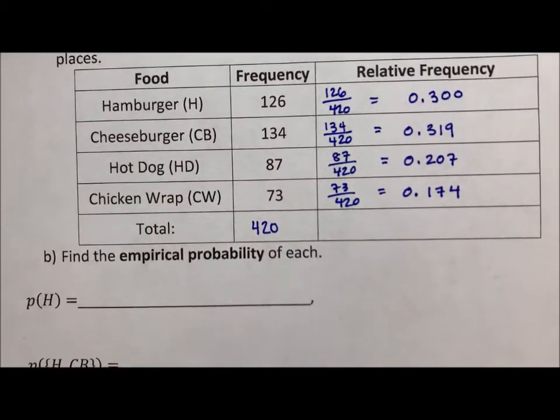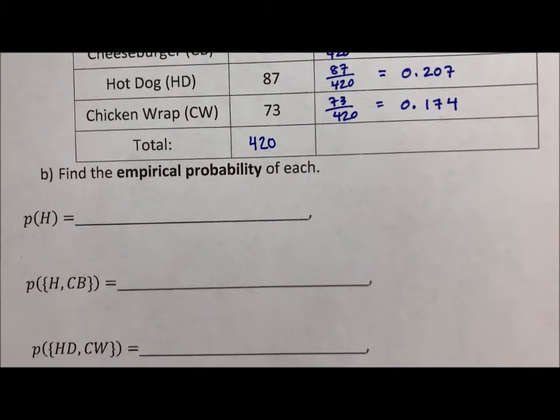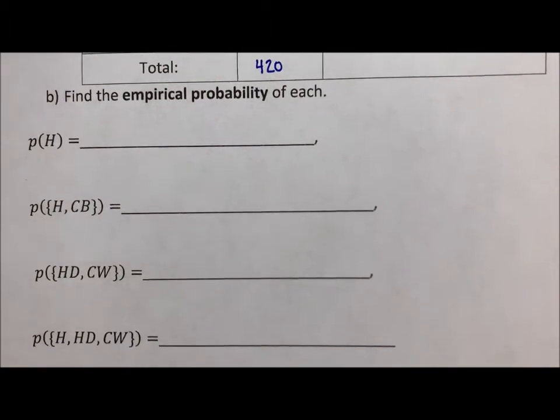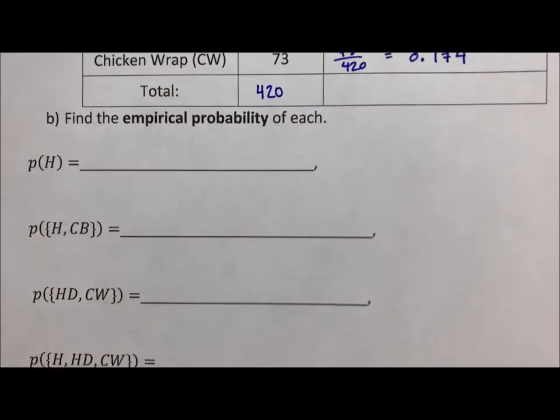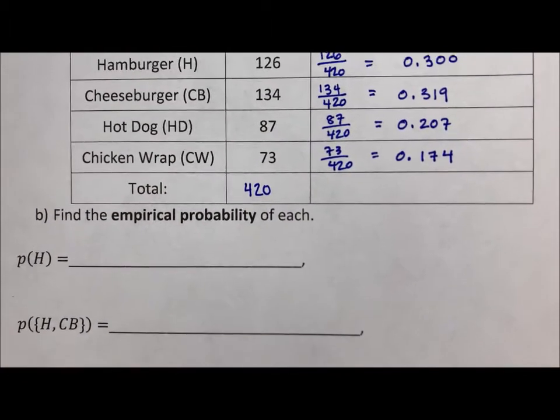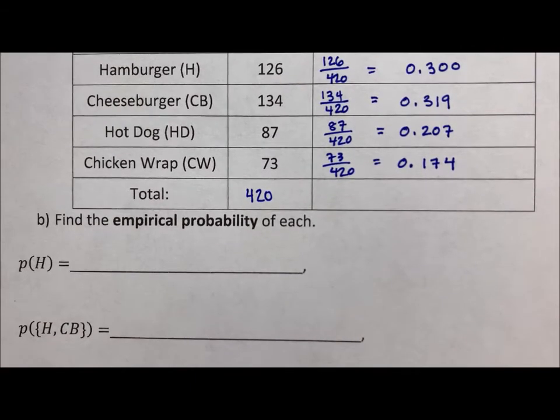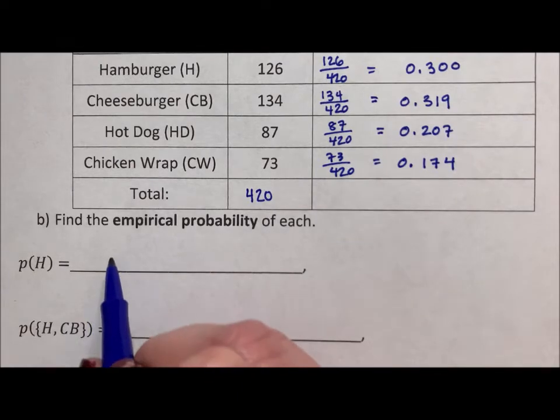Next we are coming down here. I have a feeling you're going to lose that table, so hopefully you have it all written down. It says find the probability of the hamburger. So that's just that 0.3.